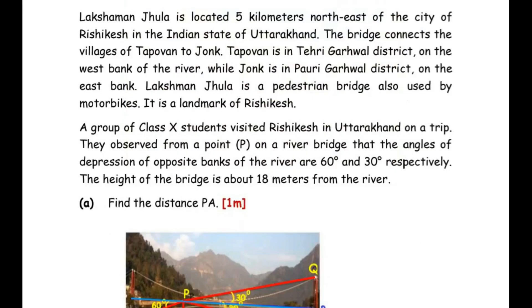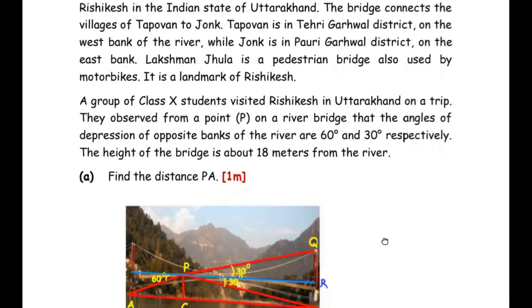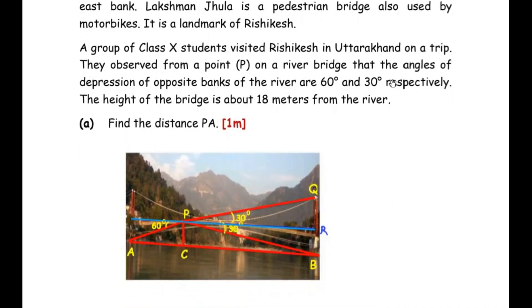Now, Laxman Jhula is located five kilometers north-east of the city of Rishikesh in the Indian state of Uttarakhand. The bridge connects the villages of Tapo One to Jonk. Tapo One is in Tehri district on the west bank of the river, while Jonk is in Pauri district on the east bank. Laxman Jhula is a pedestrian bridge also used by motorbikes — it is a landmark of Rishikesh. A group of class 10 students visited Rishikesh on a trip and observed from a point P on the river bridge that the angles of depression on opposite banks are 60 degrees and 30 degrees respectively.